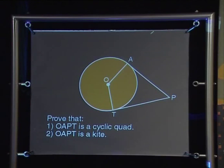Given a circle centre O with tangents PA and PT at A and T, prove that one, OAPT is a cyclic quad and two, that OAPT is a kite. Can we identify any information we have about OAPT?